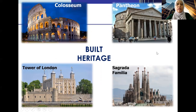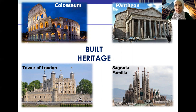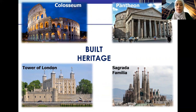Now, examples of built heritage. We are talking at a global level — the significance is at a universal level rather than local. You can appreciate the heritage values of these buildings regardless of whether you are a local person or not. For instance, if you go to the Colosseum, Pantheon, Tower of London, or Sagrada Familia — all these places are not located in Malaysia.